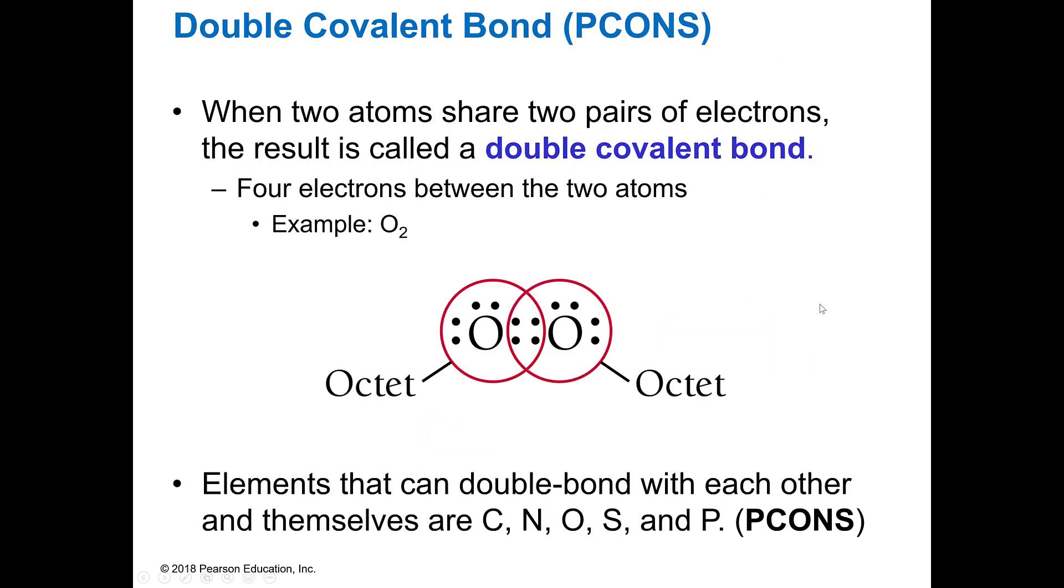You can also share more than one bond. You can do what's called a double covalent bond. And in that case, you're actually sharing four electrons between the two.